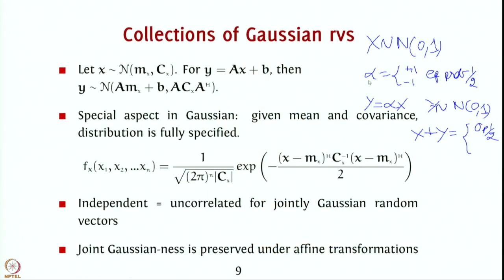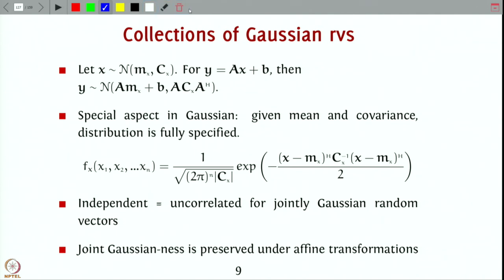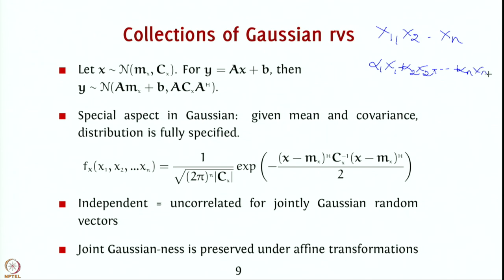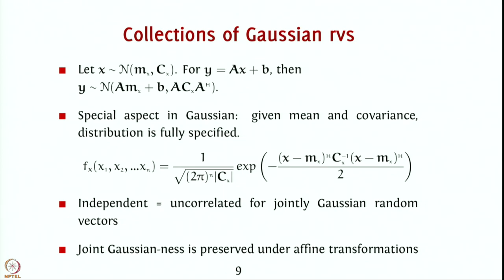So this is the classic case where two individual random variables are Gaussian but not jointly Gaussian. Jointly Gaussian means: if for any real numbers alpha_1, alpha_2, …, alpha_n, the linear combination alpha_1*x1 + alpha_2*x2 + … + alpha_n*xn is Gaussian, then x1 through xn are said to be jointly Gaussian random variables. That is the only definition of a jointly Gaussian random variable.